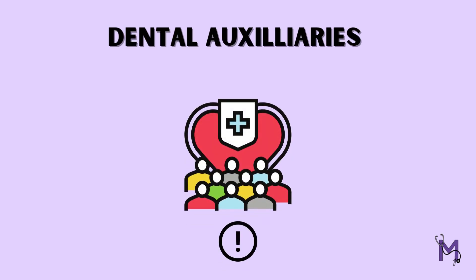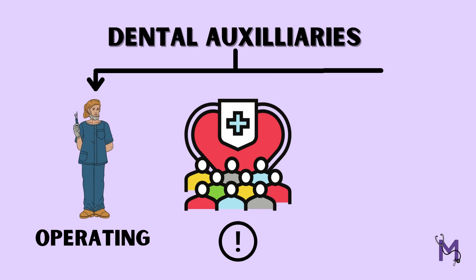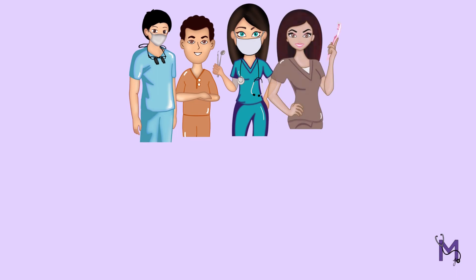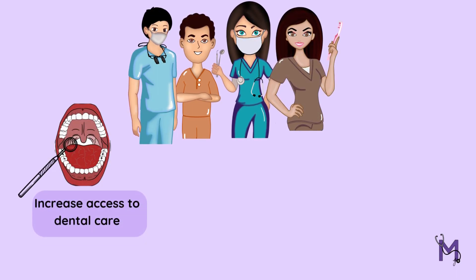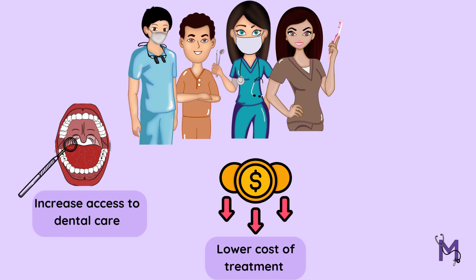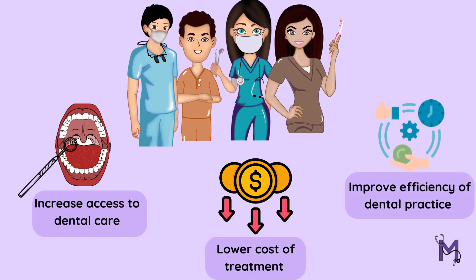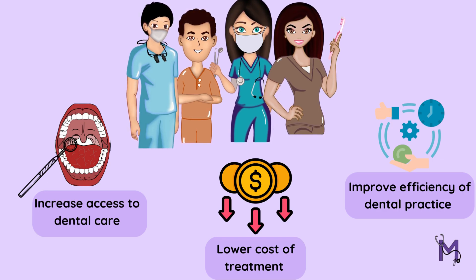In conclusion, dental auxiliaries play a vital role in public health dentistry. They could either be the operating type or the non-operating kind. Irrespective of it, by working alongside dentists to provide patient care, they help to increase access to dental care, lower the cost of treatment, and most importantly, improve the efficiency of dental practices. In our upcoming videos, we will go more into detail about the different types of dental auxiliaries.